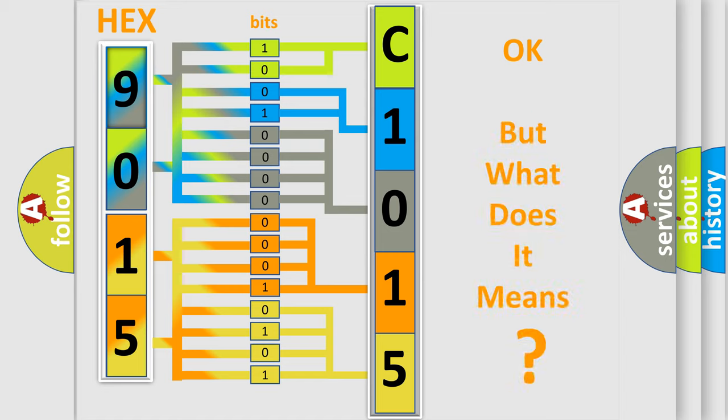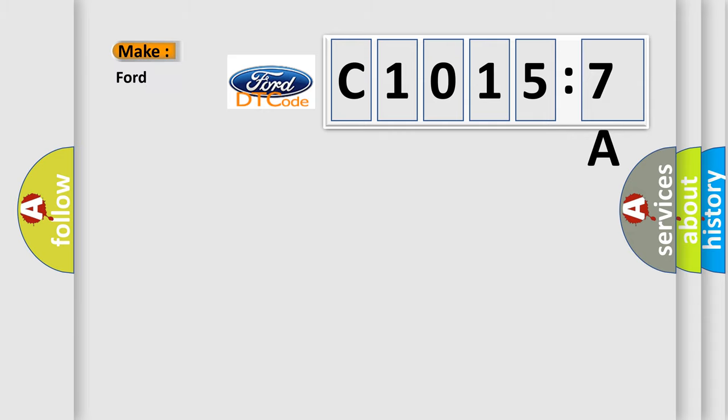We now know in what way the diagnostic tool translates the received information into a more comprehensible format. The number itself does not make sense to us if we cannot assign information about what it actually expresses. So, what does the diagnostic trouble code C10157A interpret specifically for Infiniti car manufacturers?